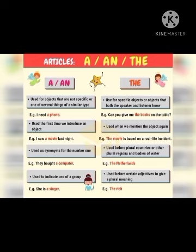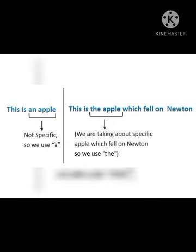Another use: 'They bought a computer' — here A functions as a number, and it is a synonym for 'one.' Also, 'She is a singer' — here we use A to denote group membership, indicating that she belongs to the group of singers. These are the main ways we use A and AN.